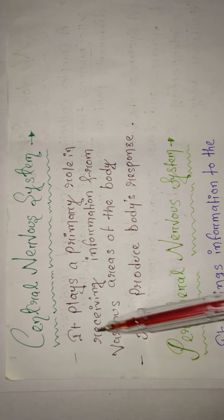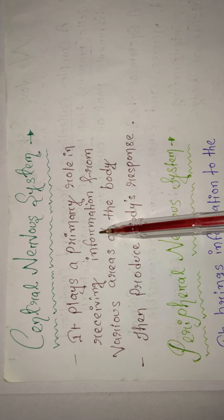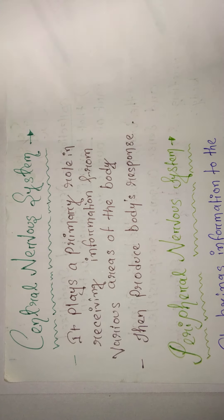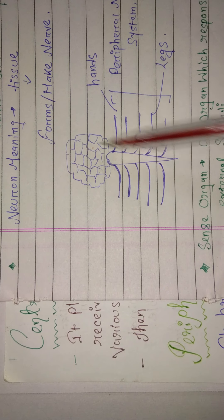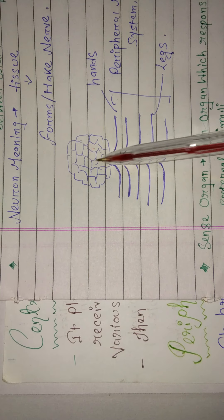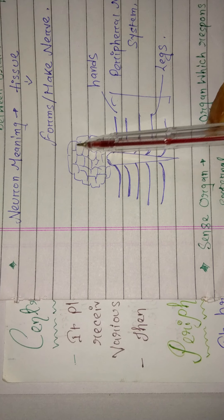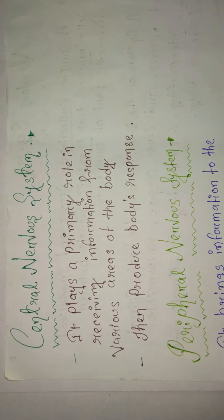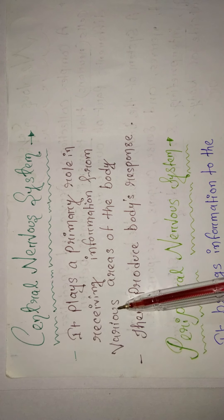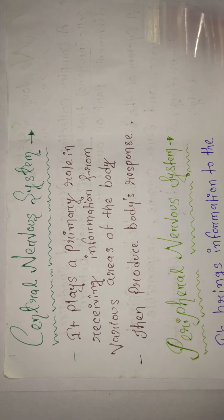Let's understand the central nervous system. The CNS plays a primary role in receiving information. The brain and spinal cord mainly receive information from various areas of the body and then produce a response.